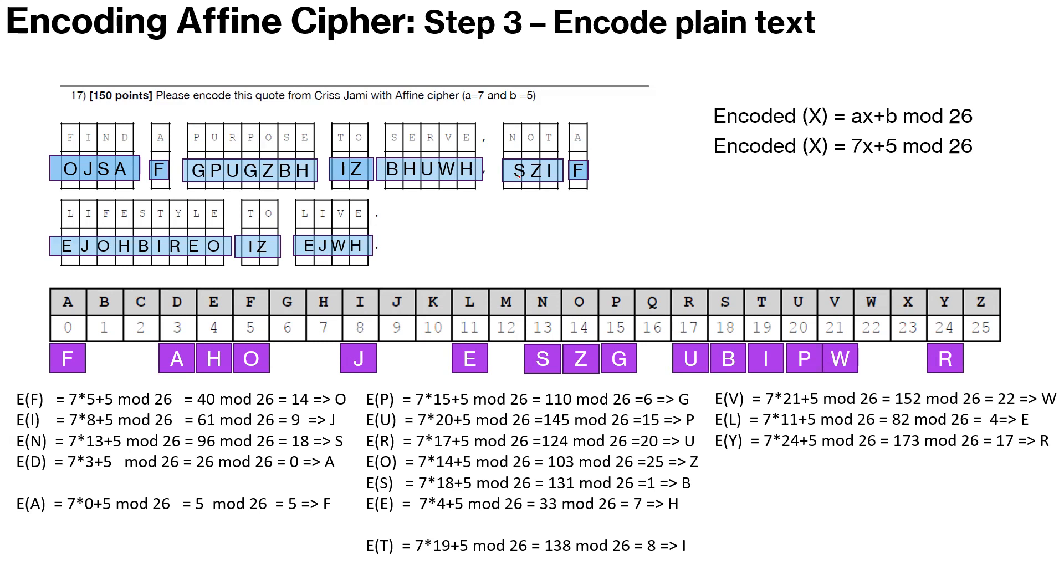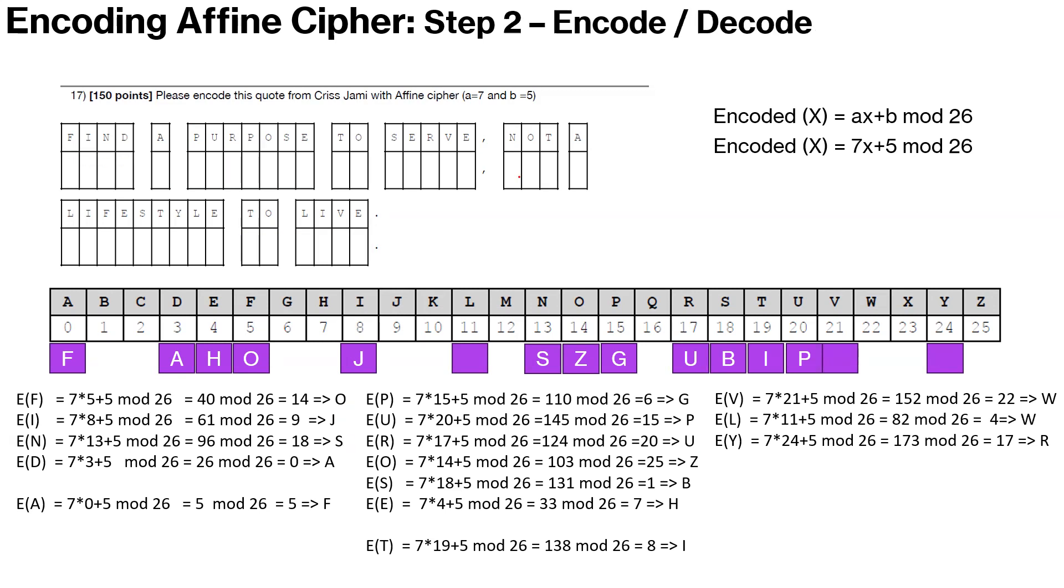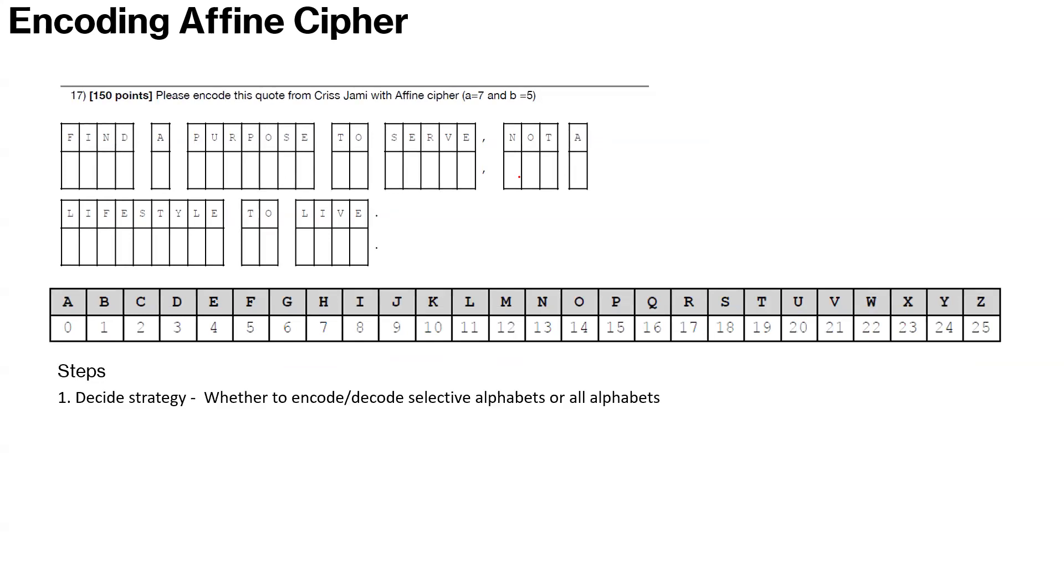In the next video, we will talk about decoding. So in short, we followed a three-step strategy. First was to go ahead and decide what we want to do, whether we want to encode only selective alphabets which make up the code, or we go ahead and encode all the alphabets. There are pros and cons. It becomes easier to encode all the alphabets. You just go one at a time and it's faster. There's a pattern you can use. So once you have decided the strategy, you can encode all alphabets or relevant alphabets. And once you have done that, we can use those to encode the plain text or decode the cipher text as the situation may be.